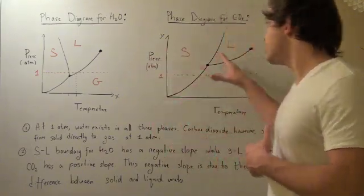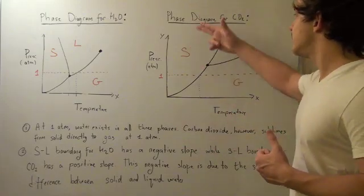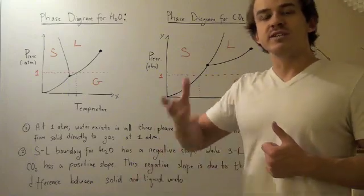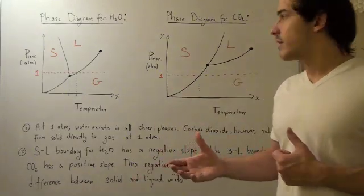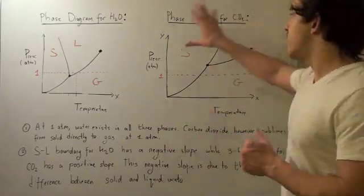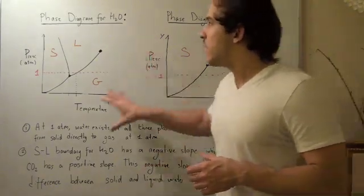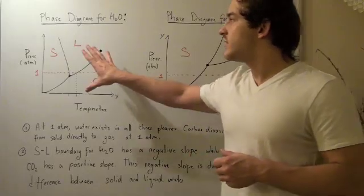But for this situation, we can't. The only way we get a solid to become a liquid is if we increase temperature. Now, for the most part, most substances follow this phase diagram. Now, some substances, such as water, follow this phase diagram. This is less common.